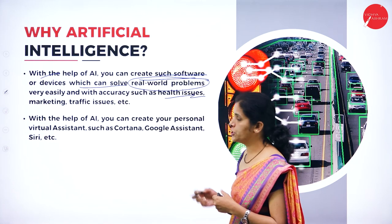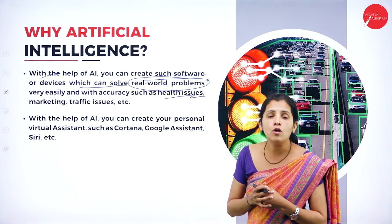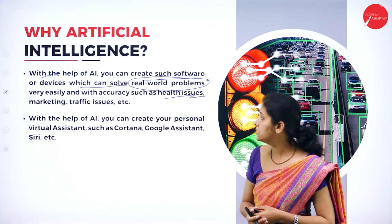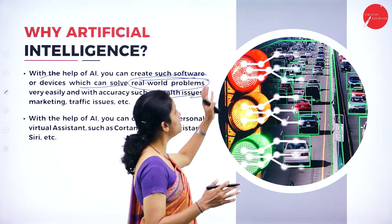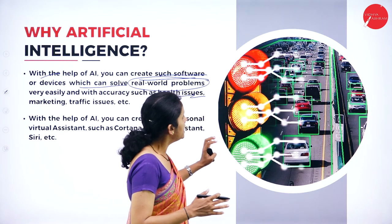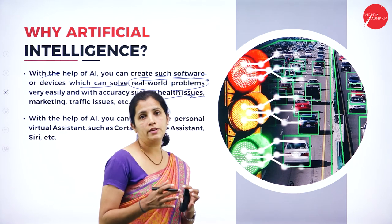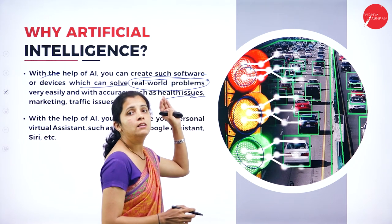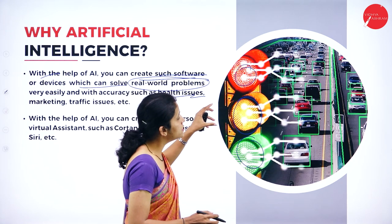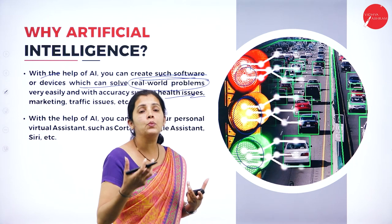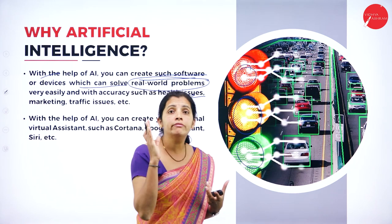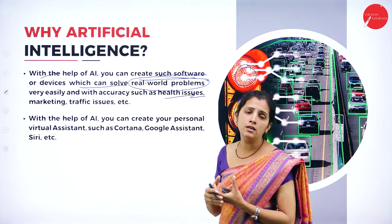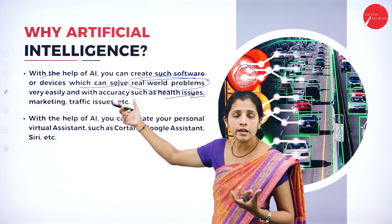AI devices and software are mainly used to solve real-world problems such as health issues, marketing issues, and traffic issues. Consider this example of a traffic control system — we use artificial intelligence here. Signal lights have cameras that capture complete information about traffic and vehicle details. To solve real-world problems like health, marketing, and traffic, we use artificial intelligence.